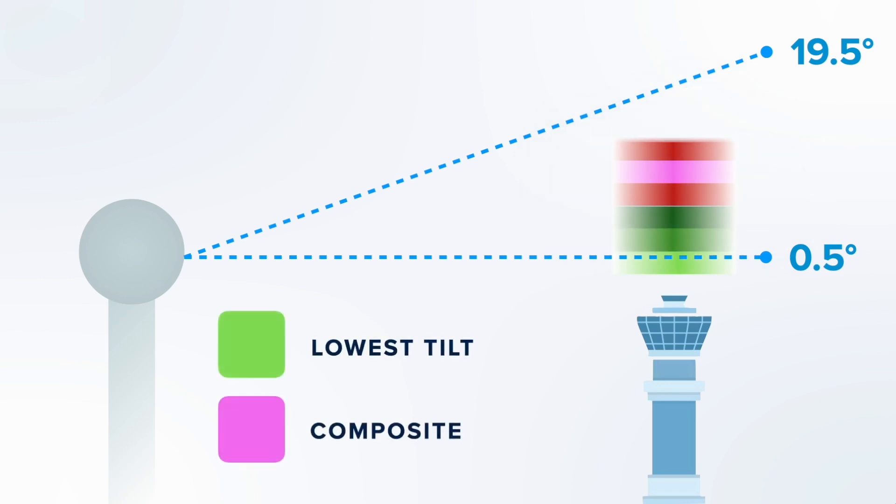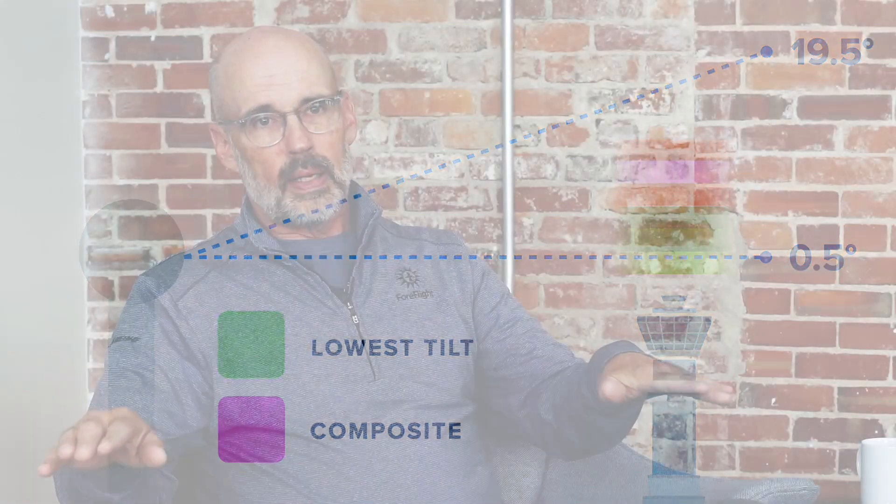Lowest Tilt takes just that lowest scan angle to give pilots flying at low elevations the best sense of what precipitation they're likely to encounter.